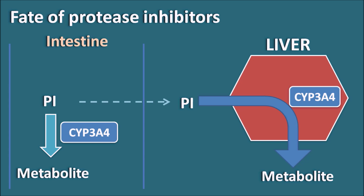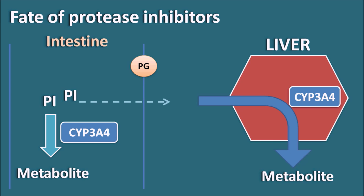The intestine also expresses pumps like P-glycoprotein pumps, which act as efflux pumps. Protease inhibitors which are absorbed into the systemic circulation can be reflected back to the intestine by these P-glycoprotein pumps. P-glycoprotein pumps are also expressed on the CD4 T-cells, which also efflux the drug out of the cell, thereby decreasing the activity of protease inhibitors.